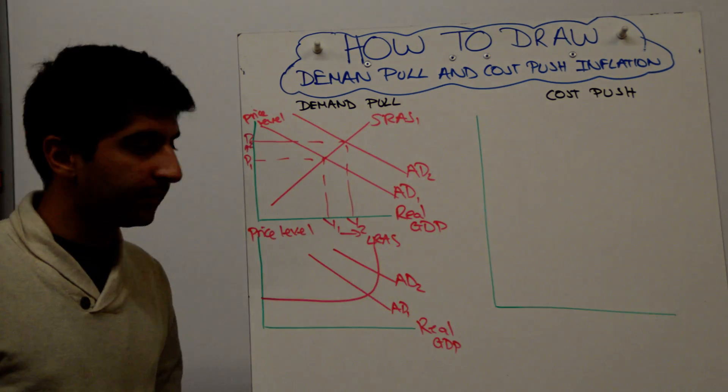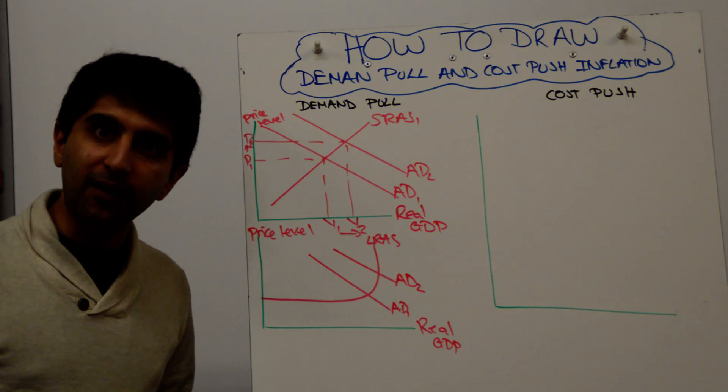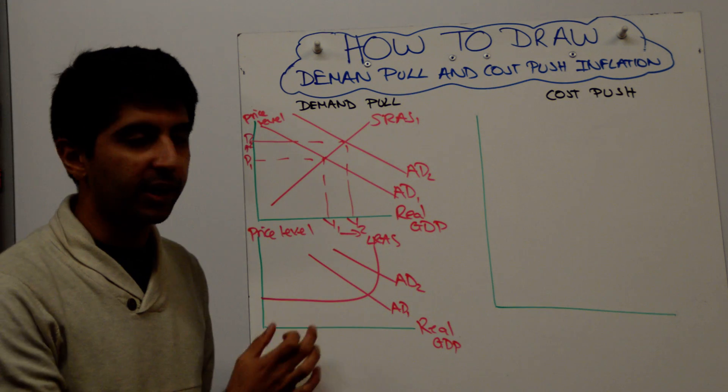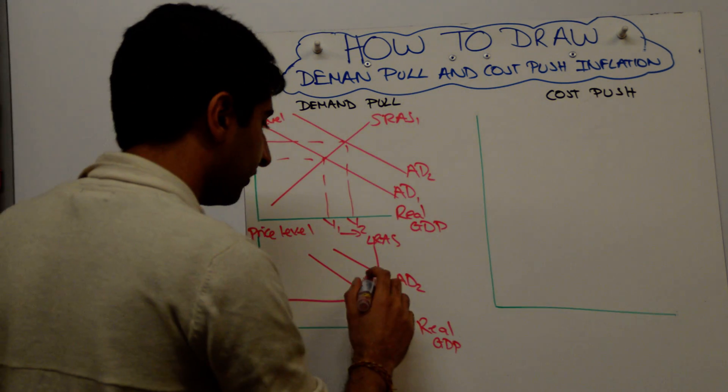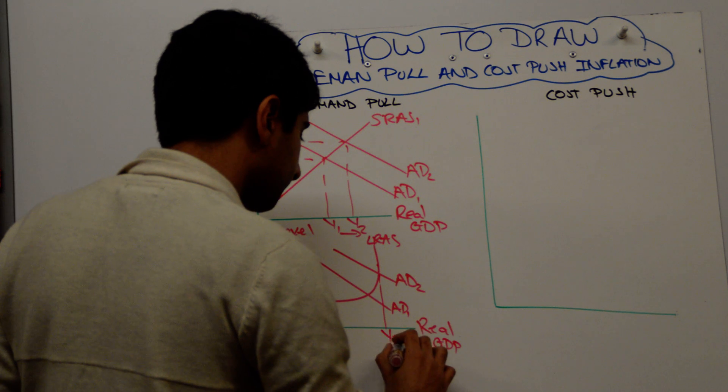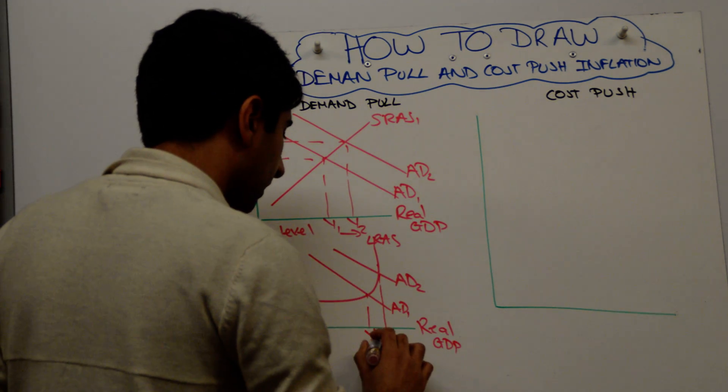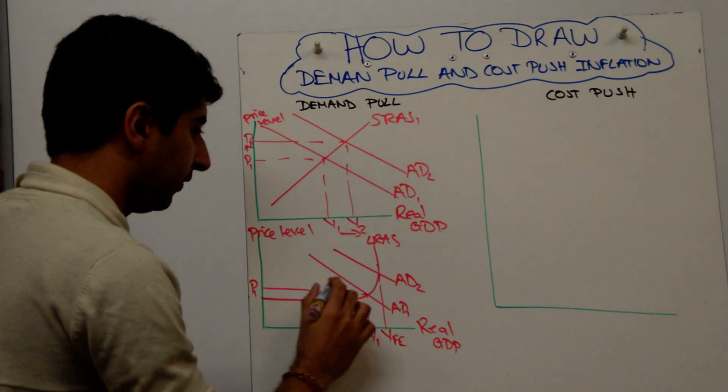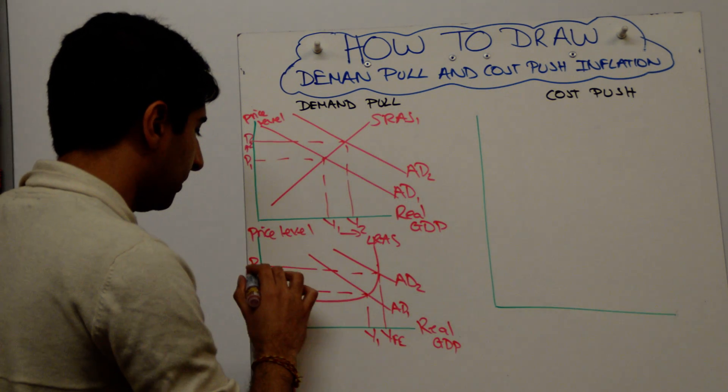on the LRAS and then shift it to the right. That will guarantee an increase in inflation. There's no point shifting AD on the horizontal part here - you won't show any inflationary pressure. All right, so the increase has taken us to Y-full employment, but most importantly there's an increase in inflation from P1 to P2.